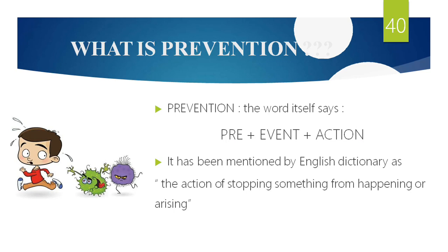So what is prevention? The word itself says pre-event action — stopping something from happening. We are going to prevent an action that might cause a disease. For example, smoking causes lung cancer, so we are preventing the action of smoking so that it won't result in lung cancer.